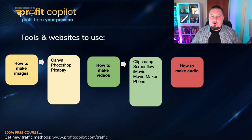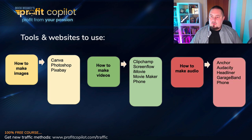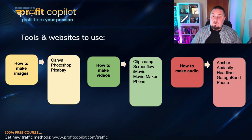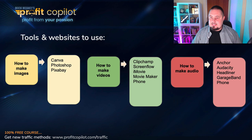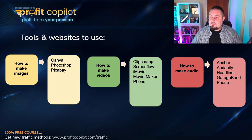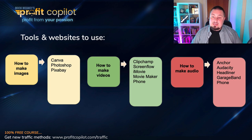For audio and podcasts, we can use Anchor.fm — a free podcasting service. We can download a free tool called Audacity to record voice, though you'll need a decent microphone. We can use Headliner.app, which is really good for making audiograms. We can use GarageBand if you're on a Mac — it has the ability to record your voice and do editing. Or again, just use your phone to record audio files; the microphone on your phone is probably good enough.